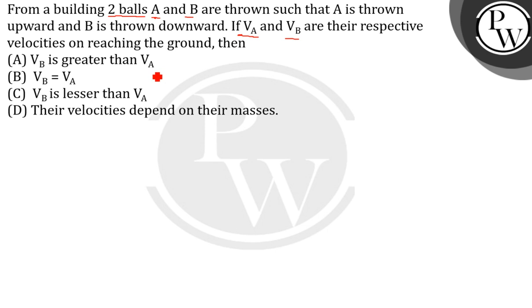The options are: VB is greater than VA, VB is equal to VA, VB is lesser than VA, or their velocities depend on their masses. So first, let us see what happens in this case.